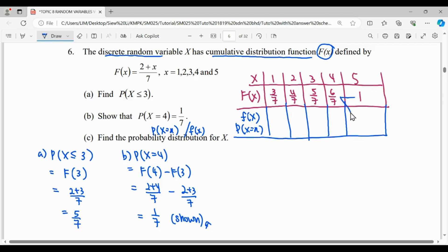1 minus 6/7 gives you 1/7. 6/7 minus 5/7 is also 1/7. 5/7 minus 4/7 gives you 1/7. 4/7 minus 3/7 will be 1/7. The cumulative before this will be 0, so the last one is 3/7.